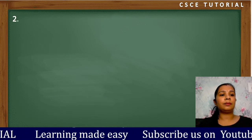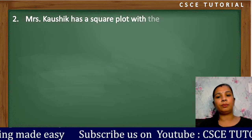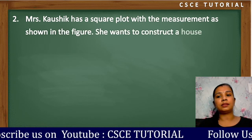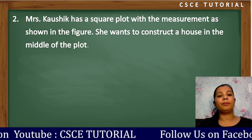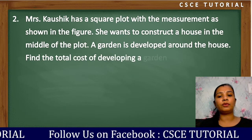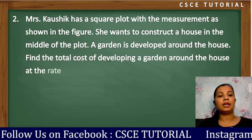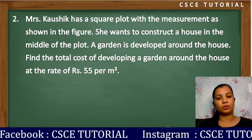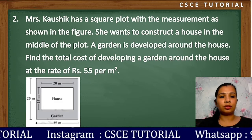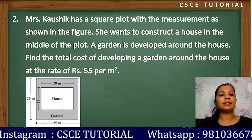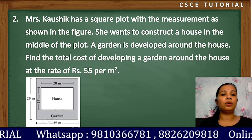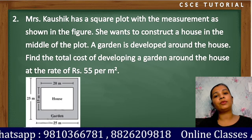The second question: Mrs. Kaushik has a square plot with measurements as shown in the figure. She wants to construct a house in the middle of the plot. A garden is developed around the house. Find the total cost of developing the garden at the rate of Rs. 55 per square meter. She wants to build her house in the middle so that the four sides form a garden.